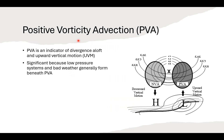Why do we care about positive vorticity advection or PVA? PVA is an indicator of divergence aloft — upper level divergence. We talked about the chimney effect in past training videos. So we have upper level divergence aloft, and then we get upward vertical motion from the surface to replace the mass being lost aloft due to divergence. And that generally equates to bad weather forming beneath these areas of positive vorticity advection.